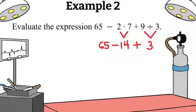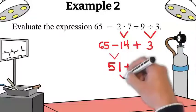Rewrite the rest of the expression. Now we have addition and subtraction left. Since we have both, we want to work left to right. 65 minus 14 is 51, and then last we can add the 3, resulting in 54.